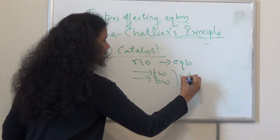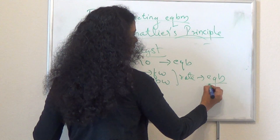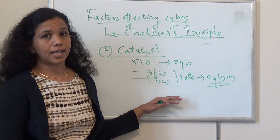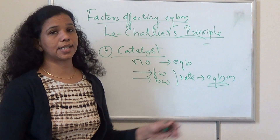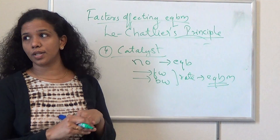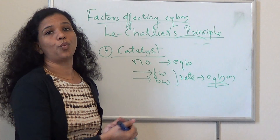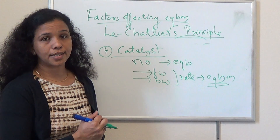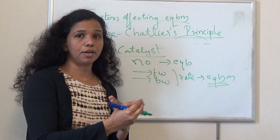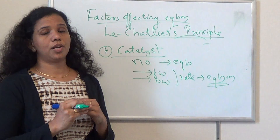A catalyst increases the speed of both the forward and backward reactions at the same rate. It helps a reaction reach equilibrium much faster. For example, if a reaction takes 10 minutes to reach equilibrium, adding a catalyst — depending on the reactants — may bring it to equilibrium in just one minute. It increases the rate of both forward and backward reactions equally, so it does not affect the equilibrium position.